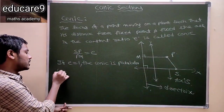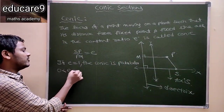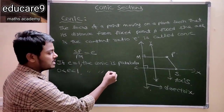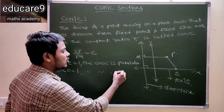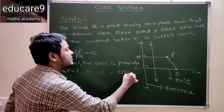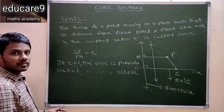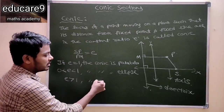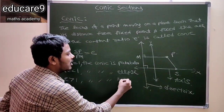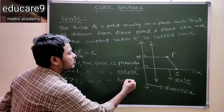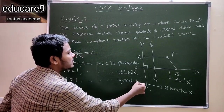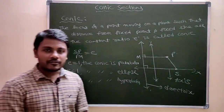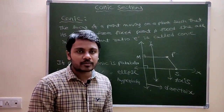If e lies between 0 and 1, then the conic is called an ellipse. If e is greater than 1, then the conic is called a hyperbola. So this is the concept of conics. For the next session, we will discuss a new concept.